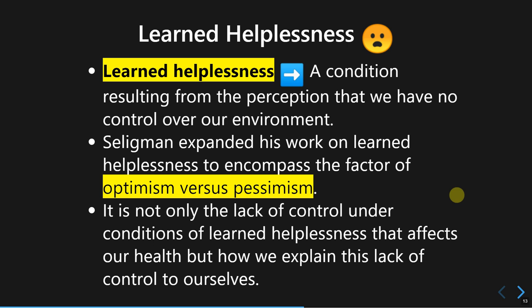Seligman not only explained this idea through decades of investigative research, he also expanded the idea of the belief that preceded this condition — that is, optimism versus pessimism. He proposed that it's not simply the belief of having no control itself that affects our health, because research shows learned helplessness can negatively affect both physical and psychological health. It's also about how we explain why we don't have control over our environment.